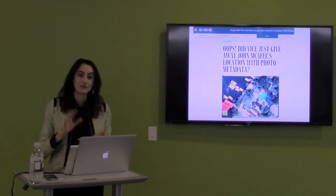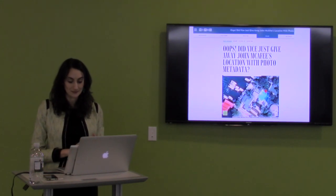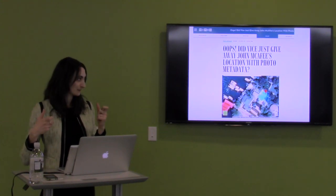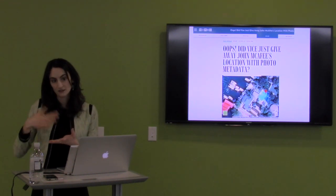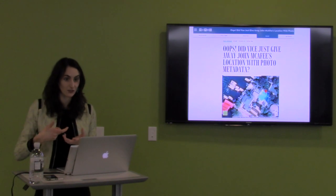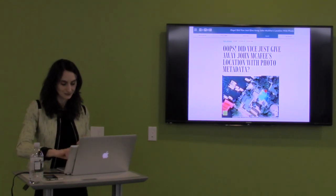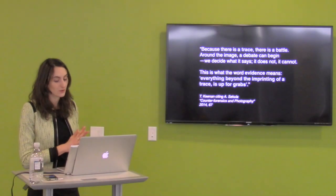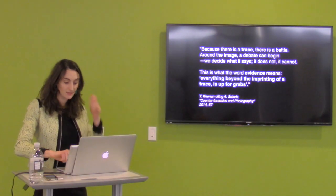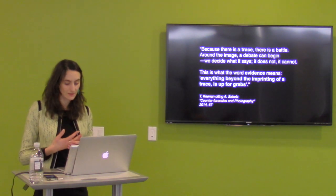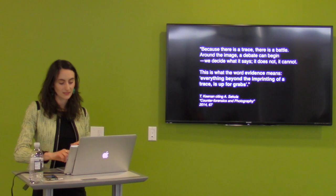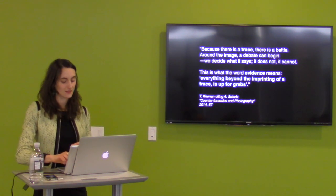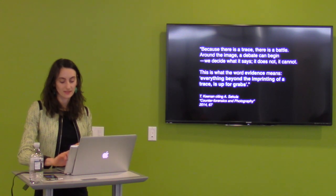Embedded metadata is a set of administrative, technical, and descriptive information that unknowingly travels within image files. What's interesting is that it provides context on the conditions of creation, use, and circulation of images. In a paper titled 'Counterforensics and Photography,' Thomas Hinnan, inspired by photography critic Alan Sekula, wrote: 'Because there is a trace, there is a battle. Around the image, a debate can begin. We decide what it says. This is what the word evidence means. Everything beyond the imprinting of a trace is up for grabs.'